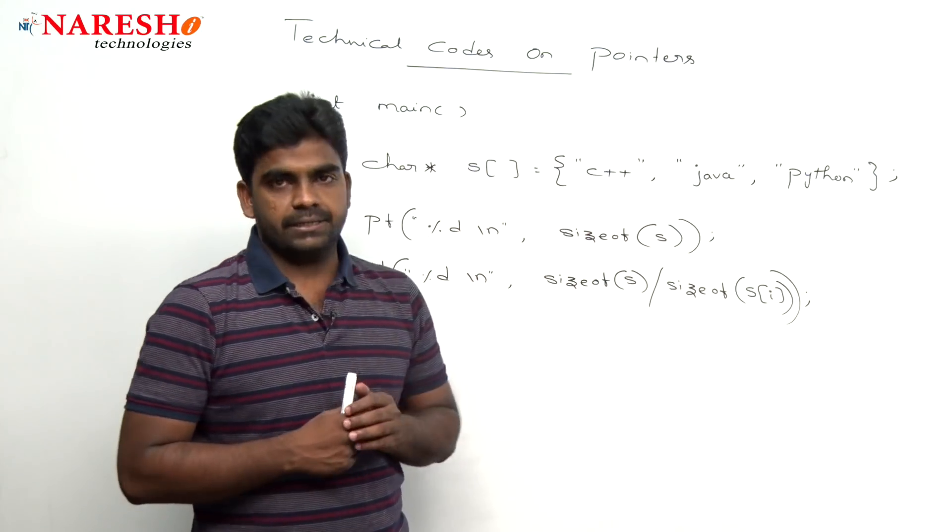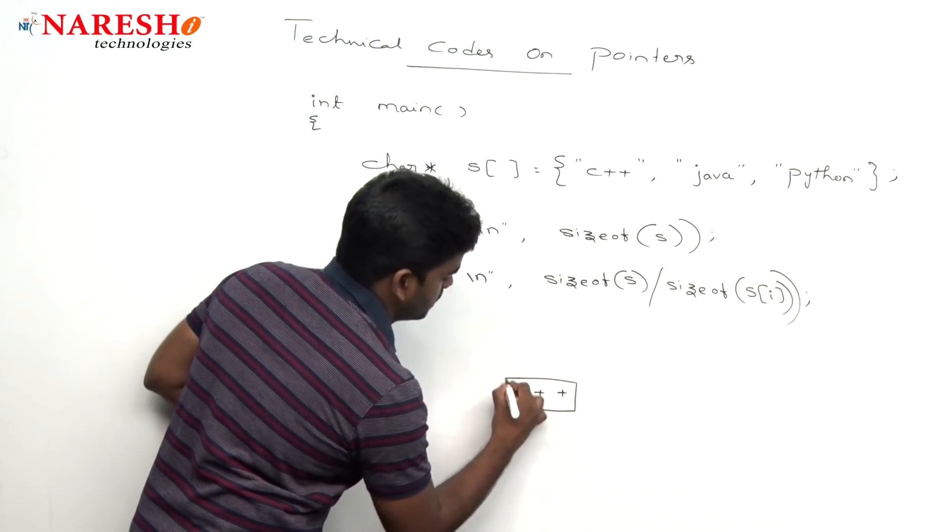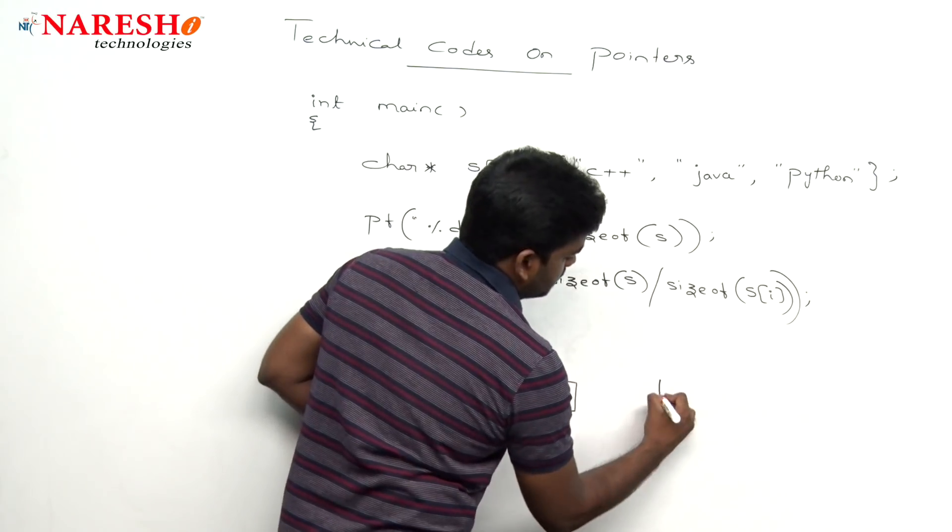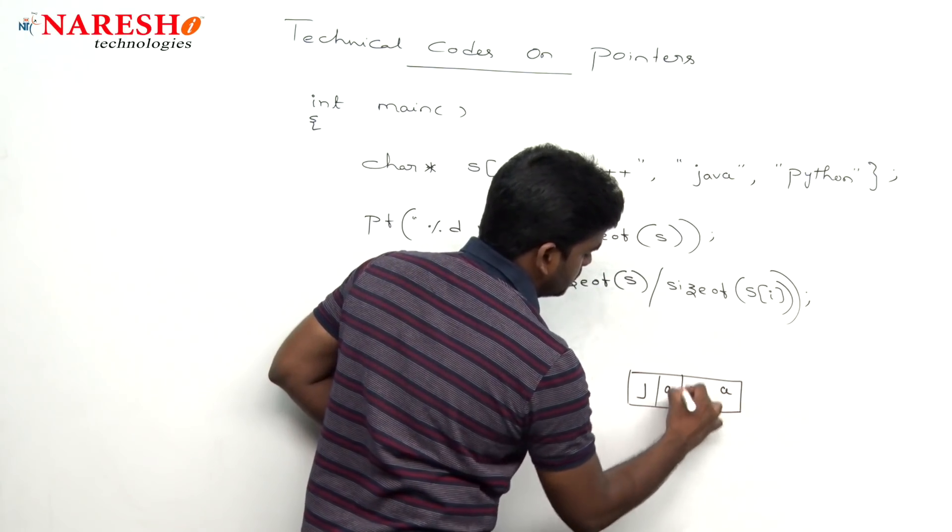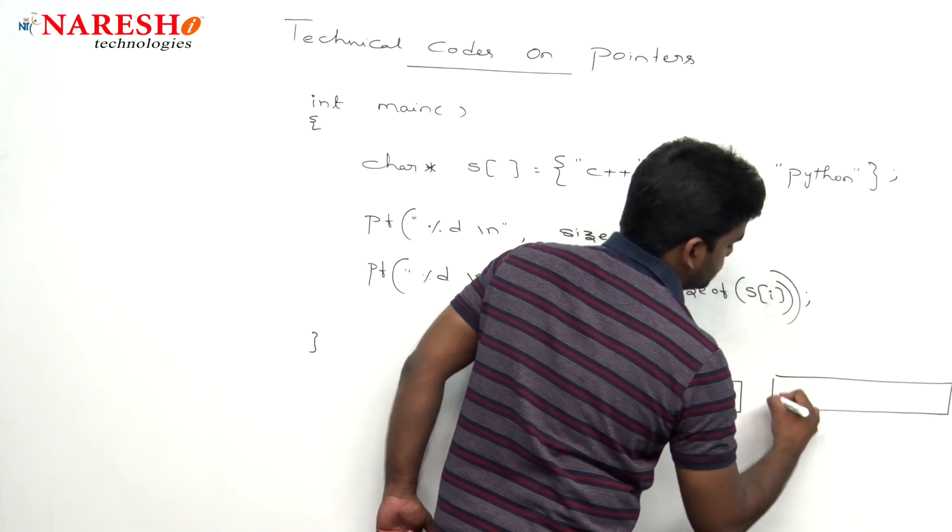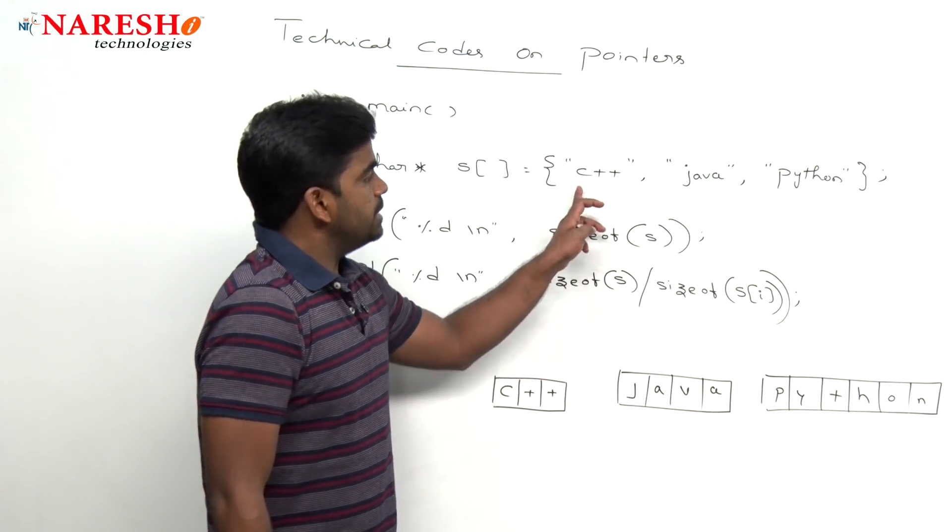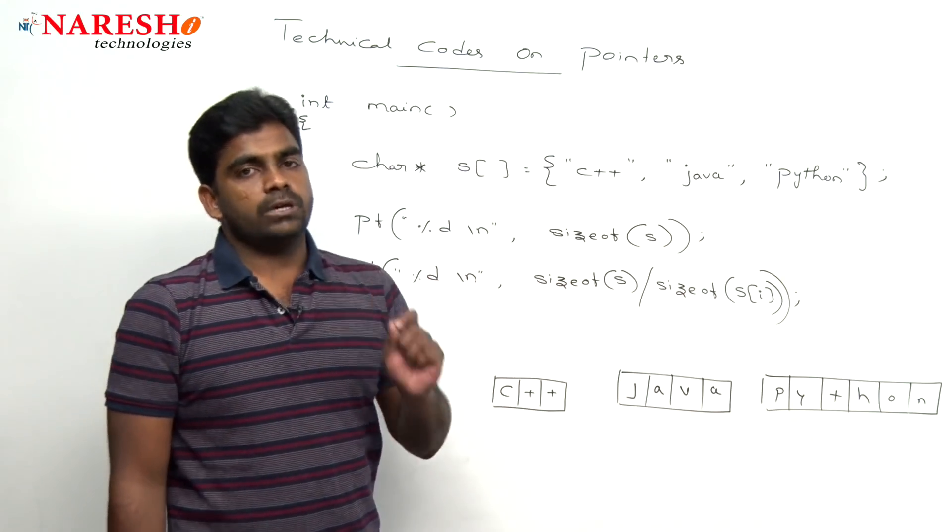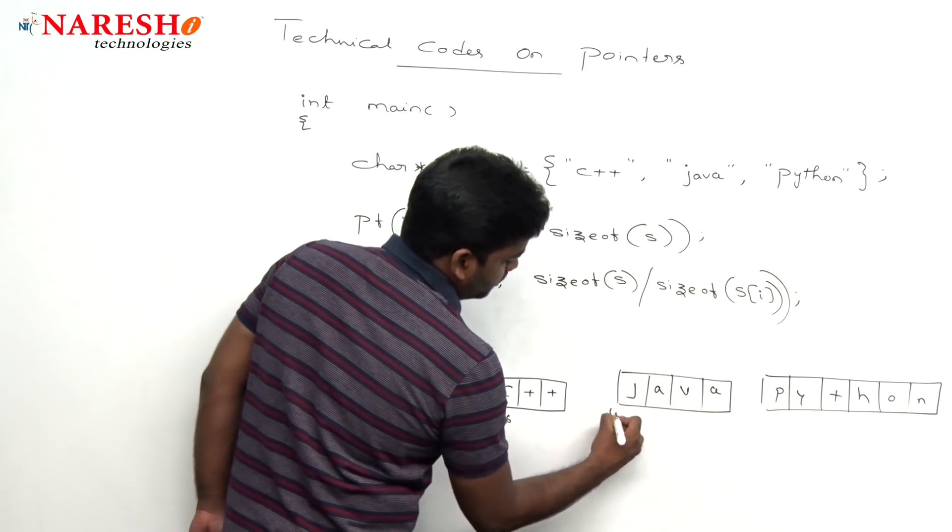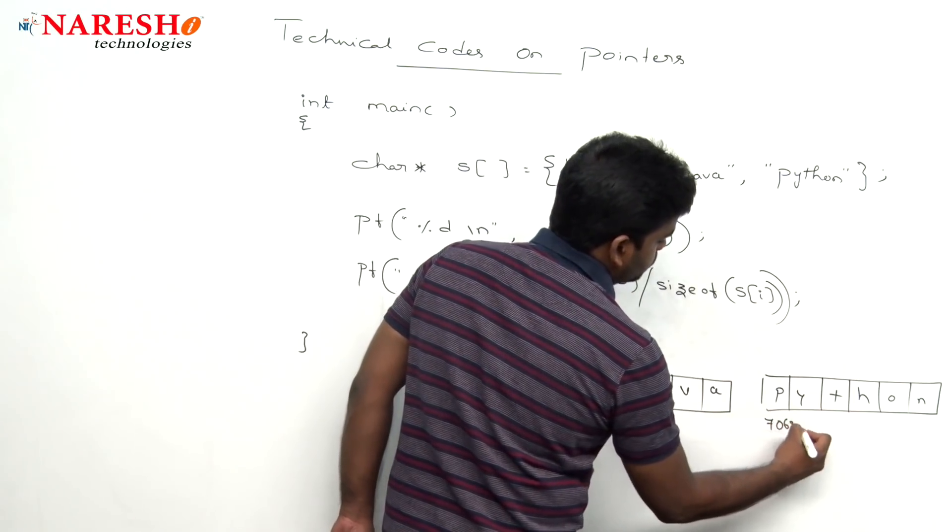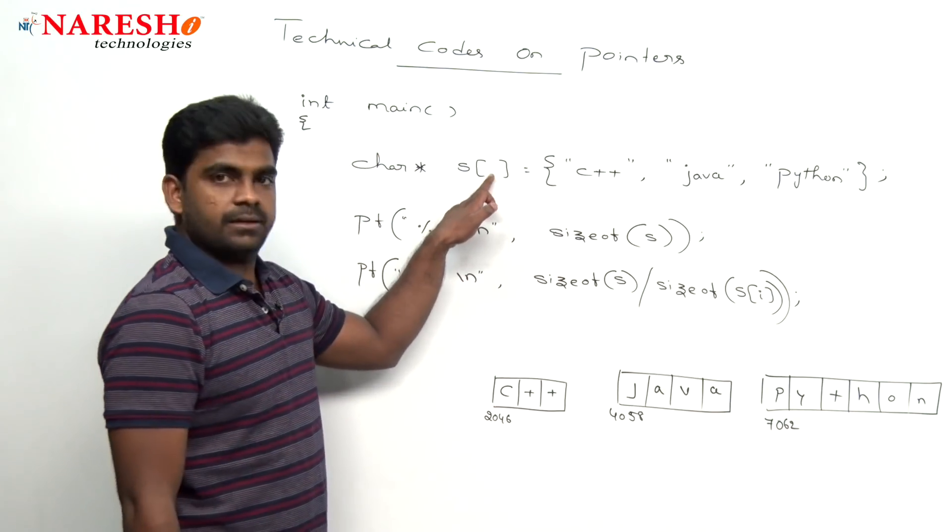How the memory will be allocated? C plus plus is a string, just like it gets memory allocation at some location. Next one here it is Java, Java gets memory allocation like this at another location. And next one Python gets memory allocation. The three strings get memory allocation at three different locations. So any address you can take, simply we are taking here it is 2046, 4058, 7062 like this we are allocating the memory. And next this is the array, it stores the three elements.